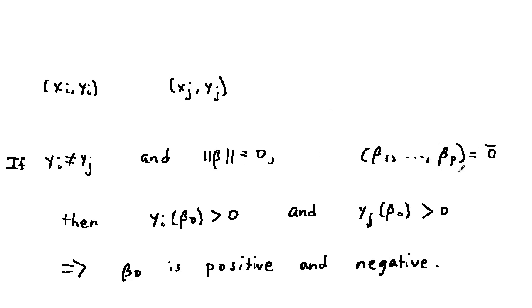Since the norm of beta is 0, we get this, but that implies that yi*beta0 is positive, and yj*beta0 is positive, assuming that beta 0, beta 1 through beta p lies in s.